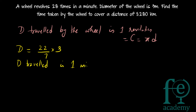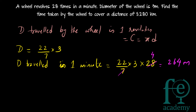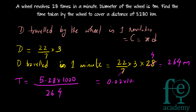In one minute the wheel makes 28 revolutions, so the distance traveled in one minute equals distance per revolution × 28 = (22/7) × 3 × 28 = 22 × 12 = 264 meters per minute. To travel 5.28 kilometers, the time required is 5.28 × 1000 ÷ 264 = 0.02 × 1000 = 20 minutes.